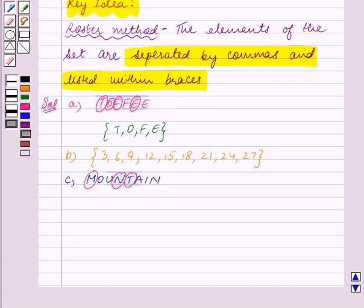For this we will write the letters M, N, T within braces separated by commas. So the set in part C can be written in roster form as the set containing the letters M, N, T. This is our answer for part C.